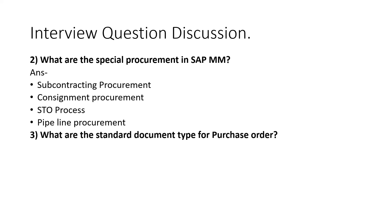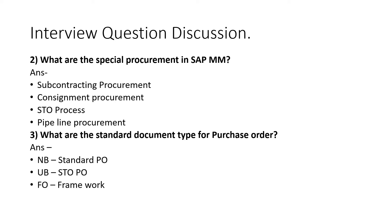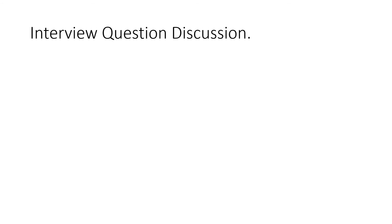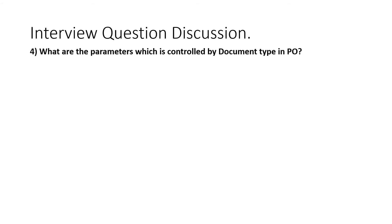The next question is: what are the standard document types for a purchase order? SAP has introduced several document types: NB for standard PO, UB for STO PO, and FO for framework orders. Based on these standard document types, we create our own document types as per business requirements.